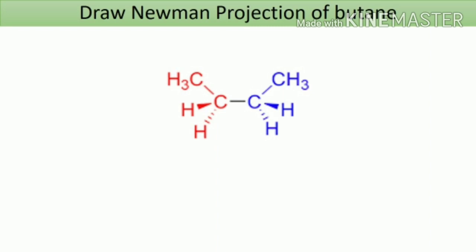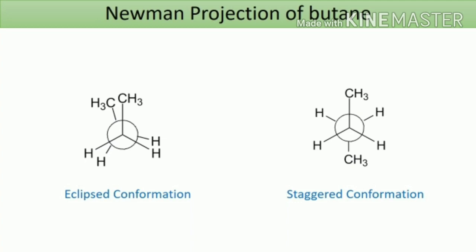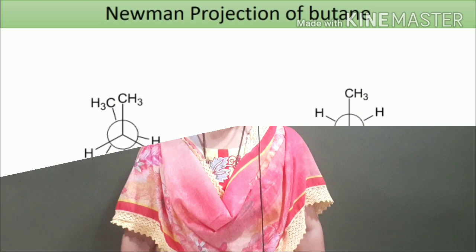If you have listened to this video carefully, you should be able to draw the Newman projection of butane. A few tips: write the structure of butane and consider that the central bond — between carbon number 2 and carbon number 3 — is kept perpendicular to the plane of paper. You are watching the molecule from carbon number 2, so carbon 2 is the front carbon and carbon 3 is the rear carbon. Check the groups or atoms attached to each carbon and verify your answer. In the next lecture, we will see how to draw the Sawhorse projection of an organic molecule.